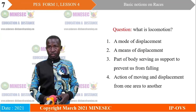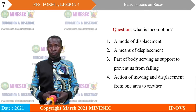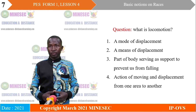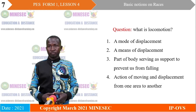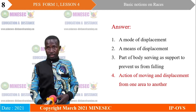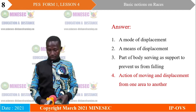The next homework question was: what is locomotion? Proposed answers included: a mode of displacement; a means of displacement; part of the body serving as support to prevent us from falling; action of moving; and action of moving and displacement from one area to another. The right answer is: action of moving and displacement from one area to another.